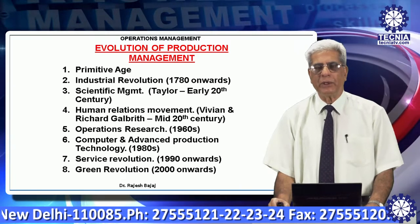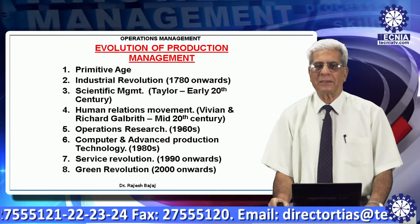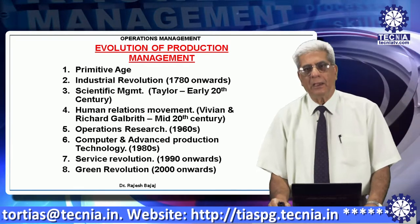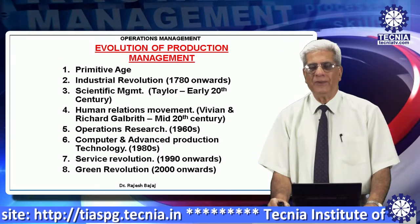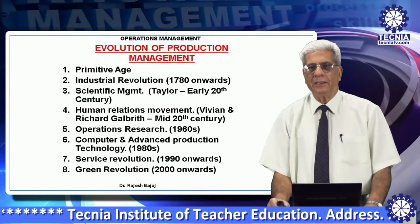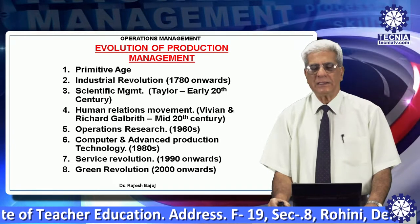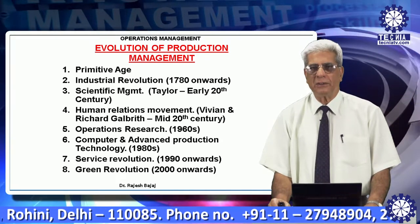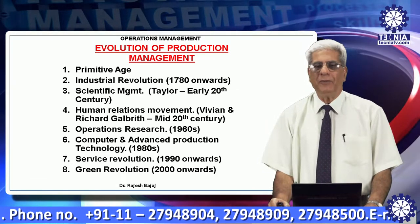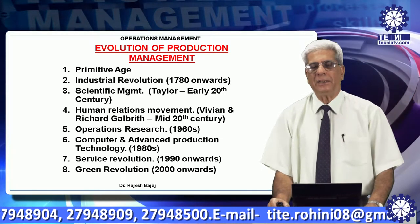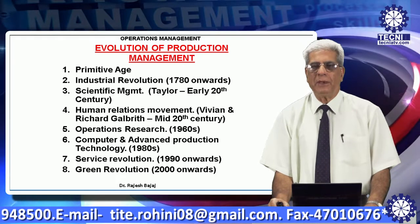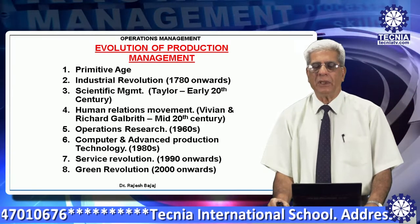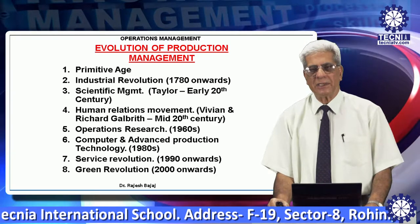Taylor set up standards for production — how much output is required, measurement techniques started, and how much output is expected from an individual. The next era was human relations. You must have heard the names of Gilbreth — they were social scientists working on human relations. Their thinking was that if you give a comfortable working environment to labor, they will produce more, quality will be good, and labor will be more happy to work for you. So they started working on how to make the working environment more comfortable, and that's how the era of time and motion studies started, reducing the physical strain on workers.